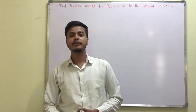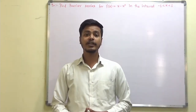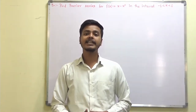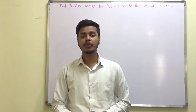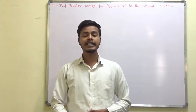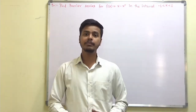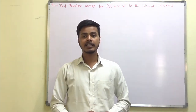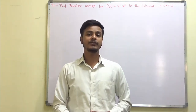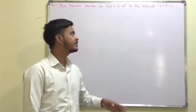Hello and welcome to this learning video. In this video we are going to take one example where it seems like a problem of even and odd, and students end up finding only a₀ and aₙ, or only bₙ, but the problem demands all the Fourier coefficients. Let's see what this problem is.